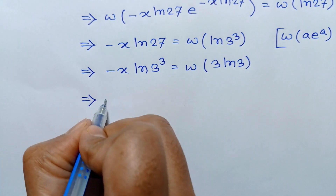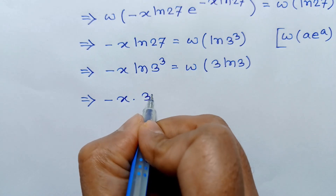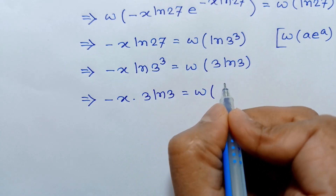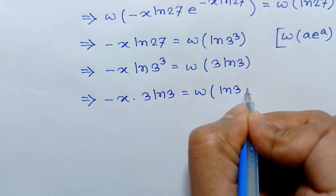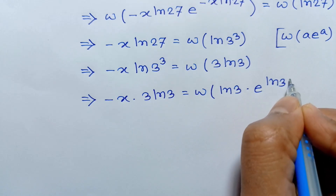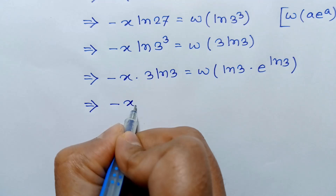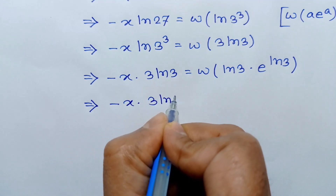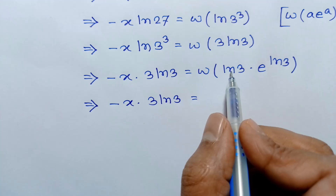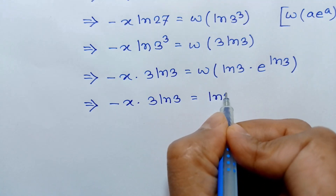So negative x times 3 ln of 3 equals W of 3 ln of 3. Applying the Lambert W function again, W of a e to the power a equals a, so W of 3 ln of 3 simplifies to ln of 3.